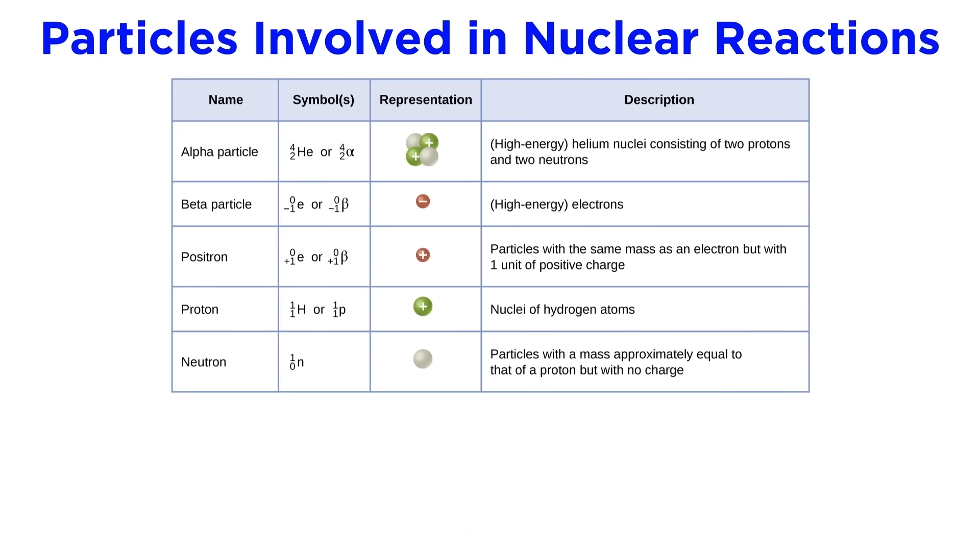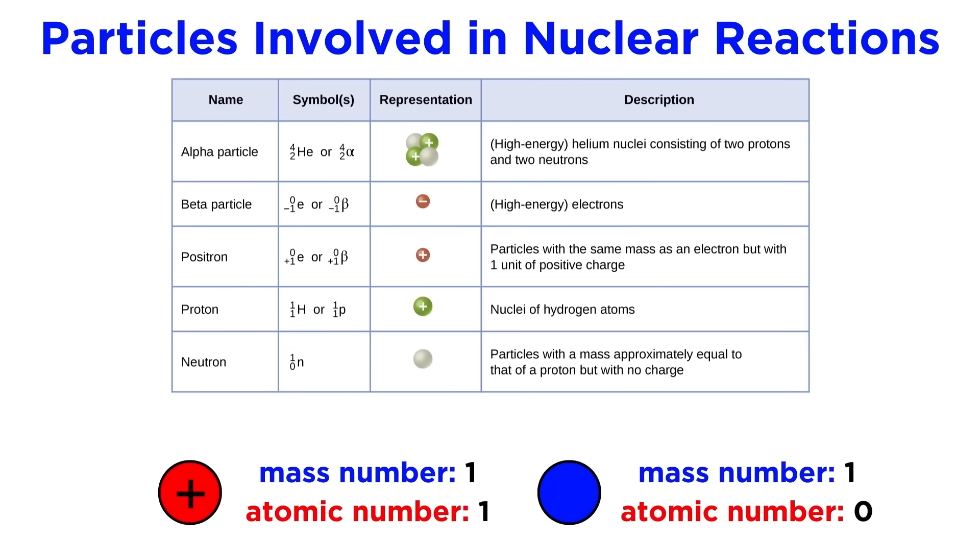Next we have the proton and the neutron. These should be very familiar, as they are the normal nucleons found in any atom. A proton can be referred to with either a lowercase p or a capital H, as a hydrogen nucleus is simply a proton. This will have atomic number one and mass number one. The neutron will be referred to with a lowercase n, and it will also have a mass number of one, but its atomic number will be zero, as it has no charge.